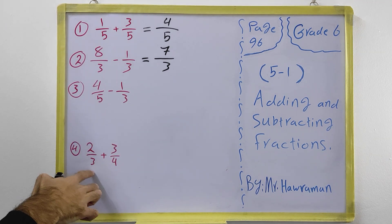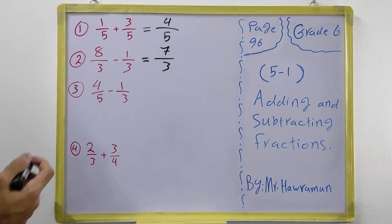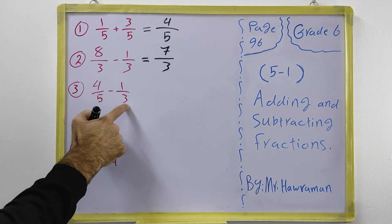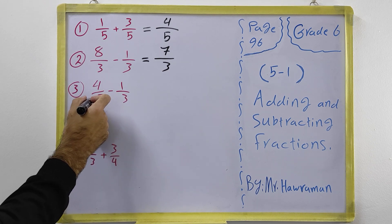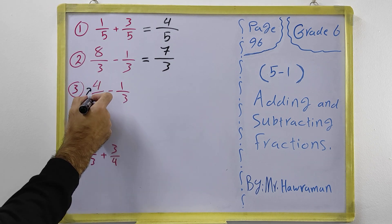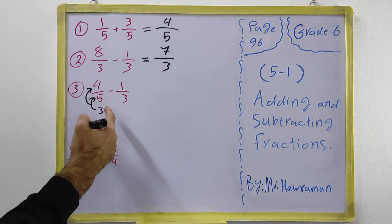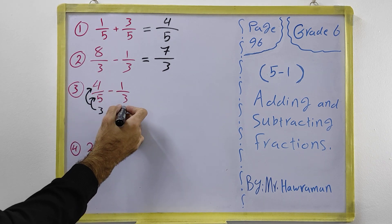When the denominators are different, we have to make them the same. We can do this by finding the least common multiple, or by cross-multiplying: multiply each fraction by the denominator of the other one.